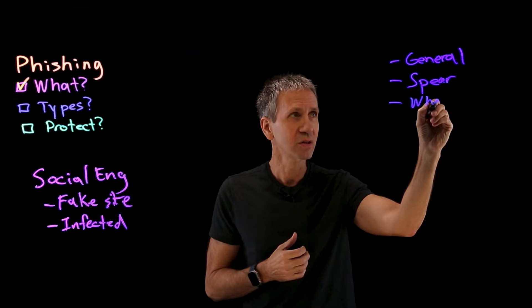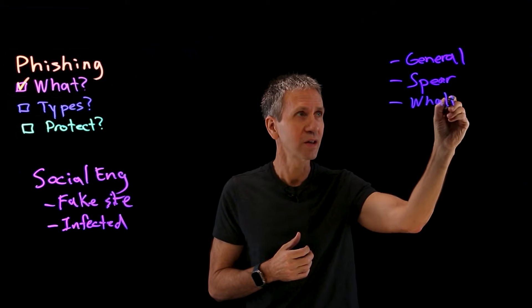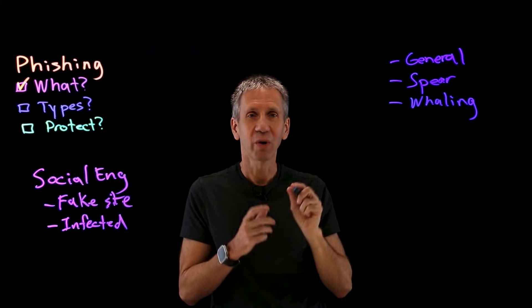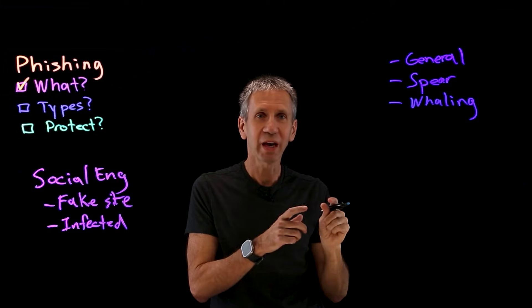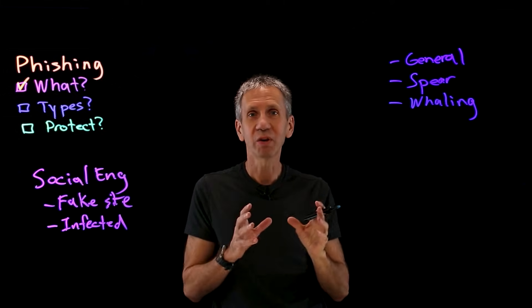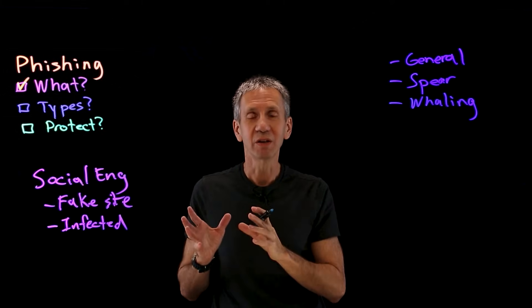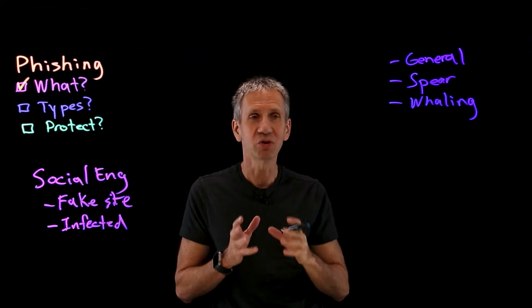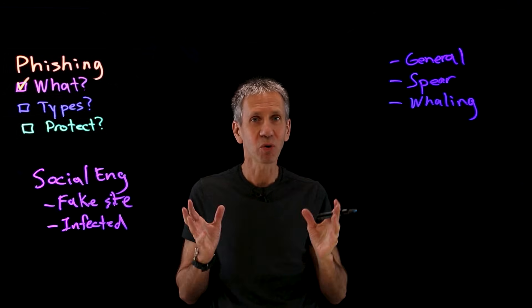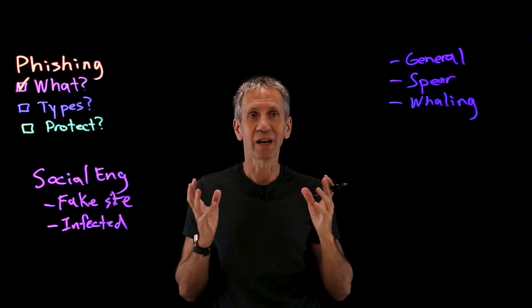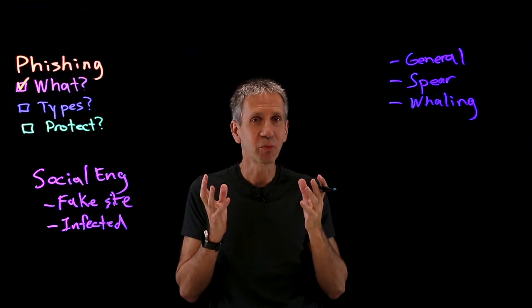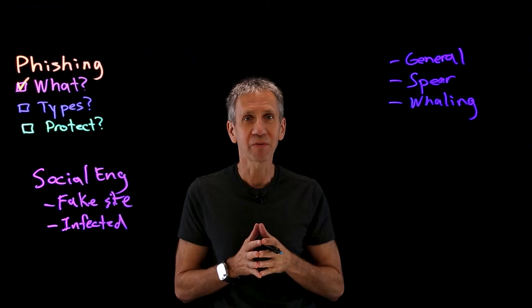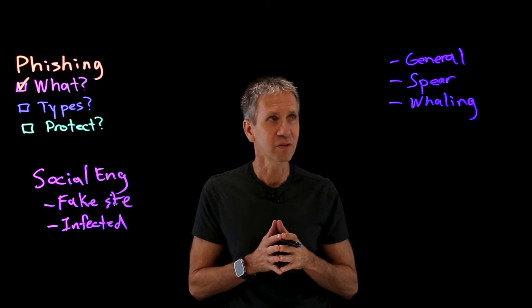Another variation is called whaling. This is a special case of spear phishing where the attacker goes after the big fish — the C-suite. They're targeting the CEO, CFO, COO, or someone with lots of access and valuable information. Because of this, the message will be very specially crafted with lots of detail to make sure it's effective.